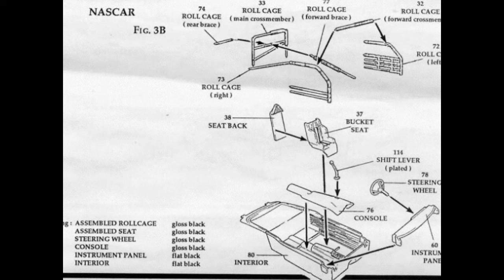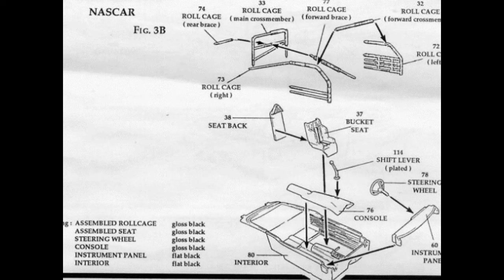For the NASCAR version, a center console blank-out part was created to cover the factory stock center console, while a new panel-type dashboard was added along with a racing steering wheel, six-piece roll cage, and a two-piece racing bucket seat.